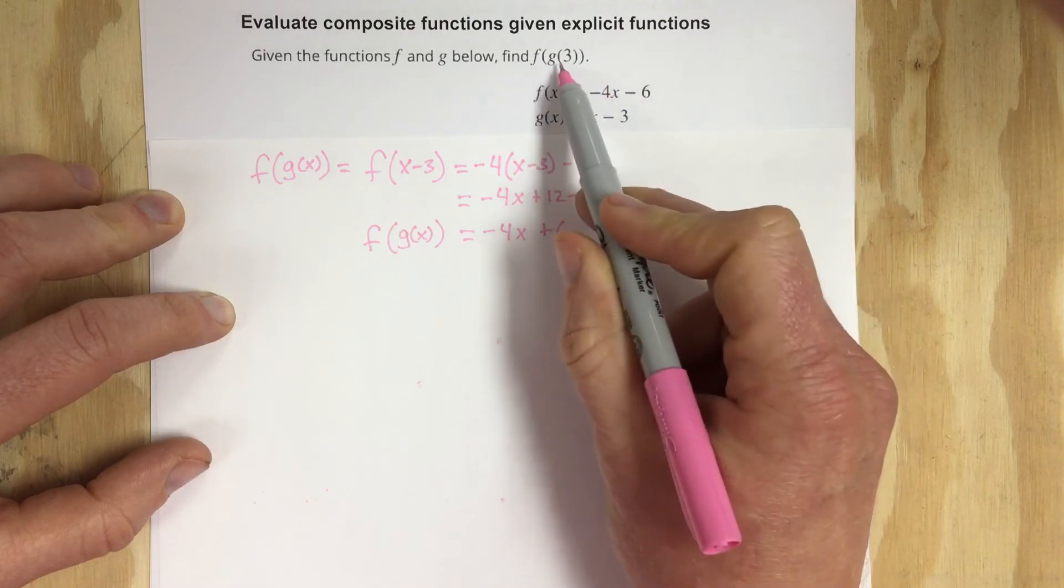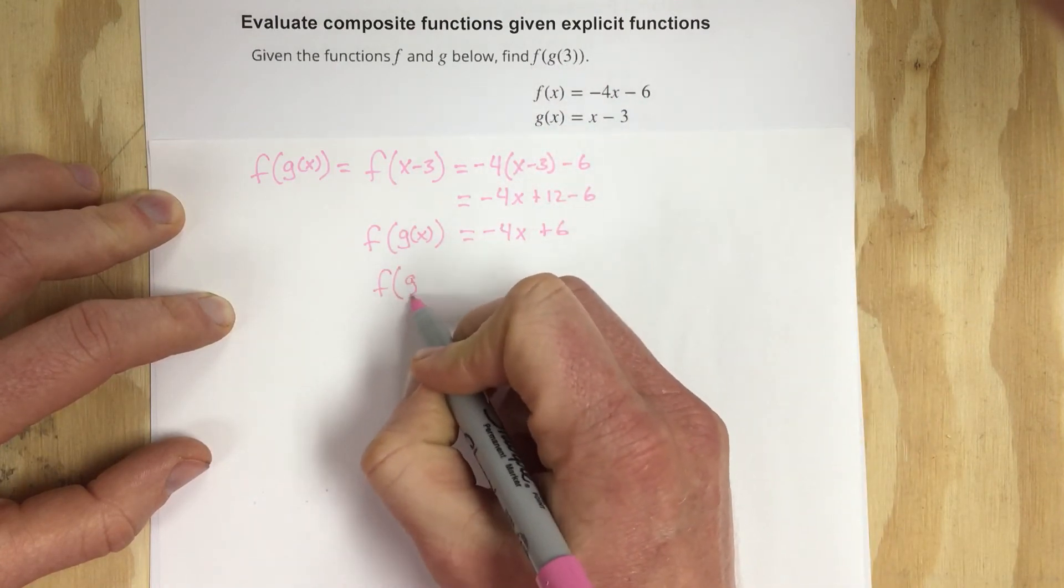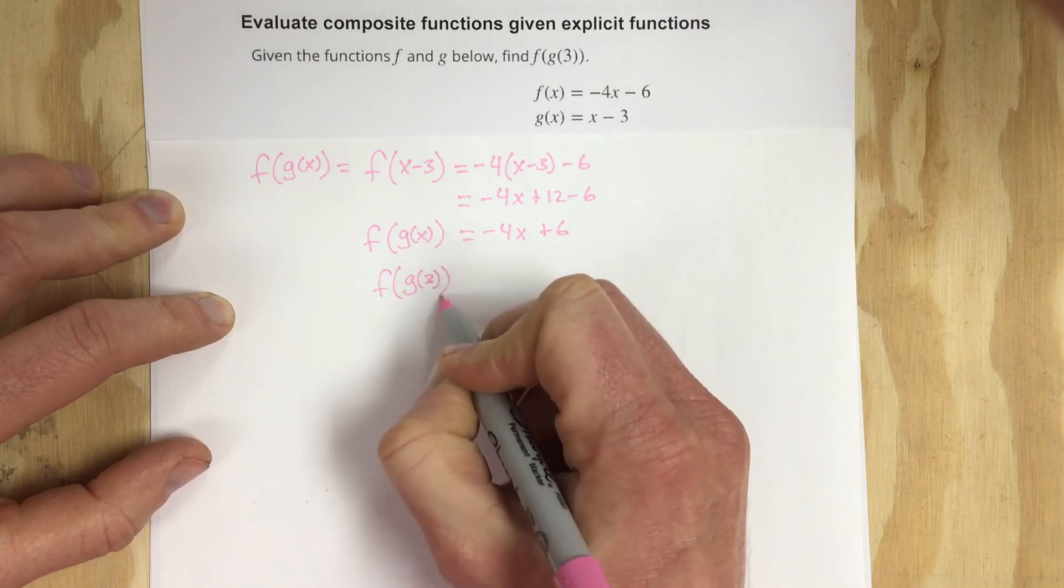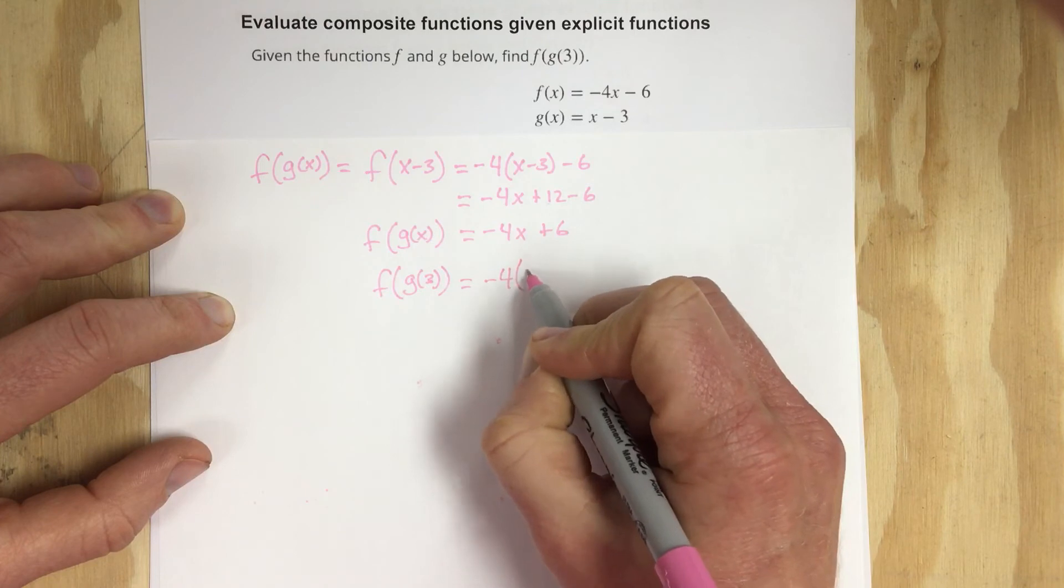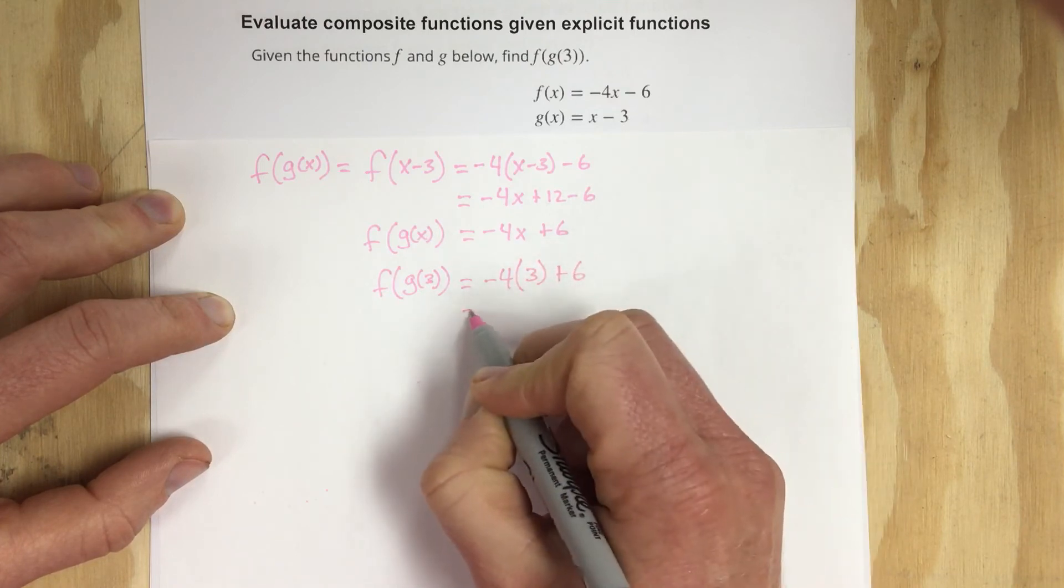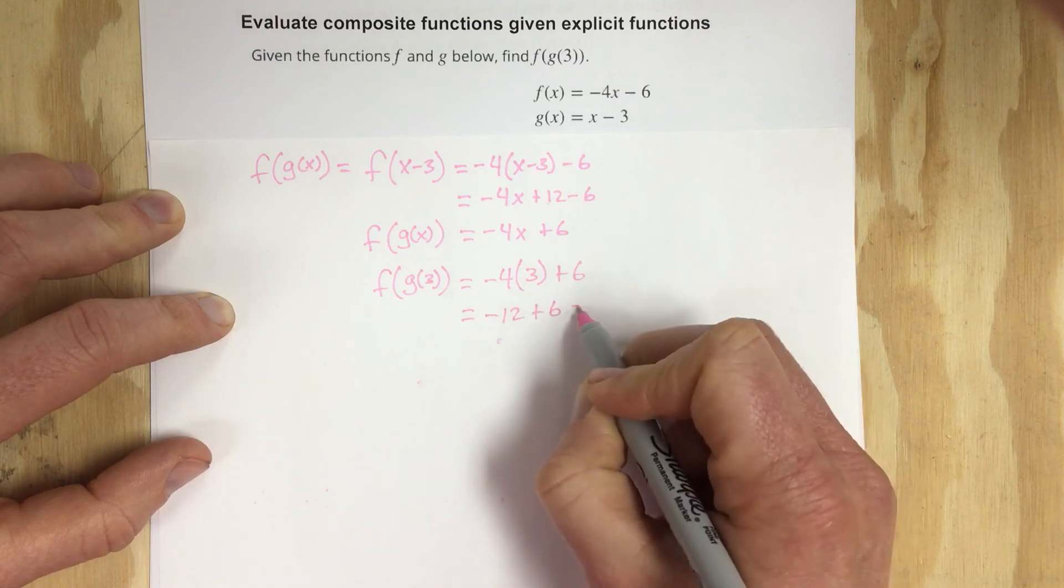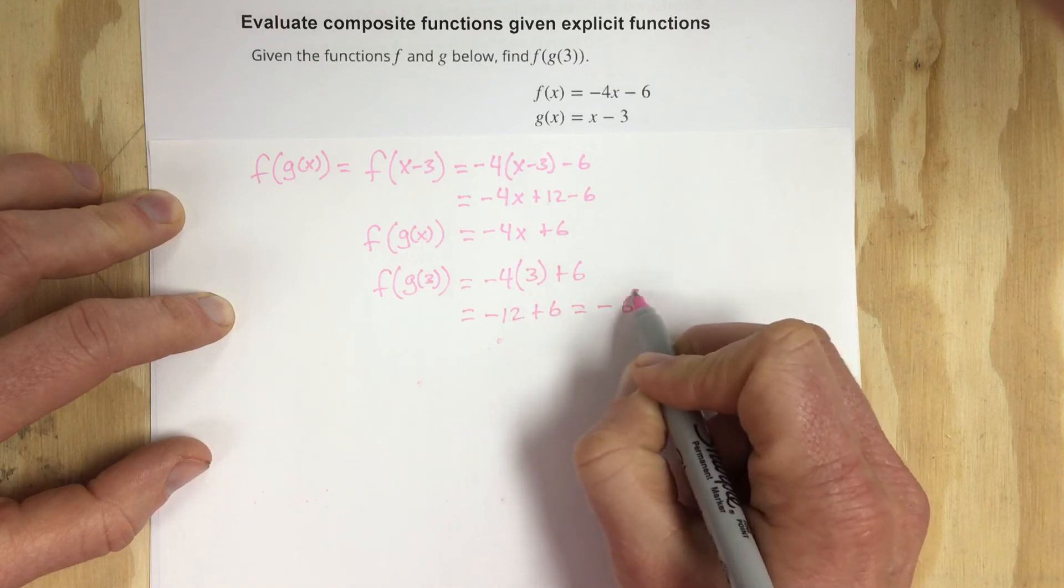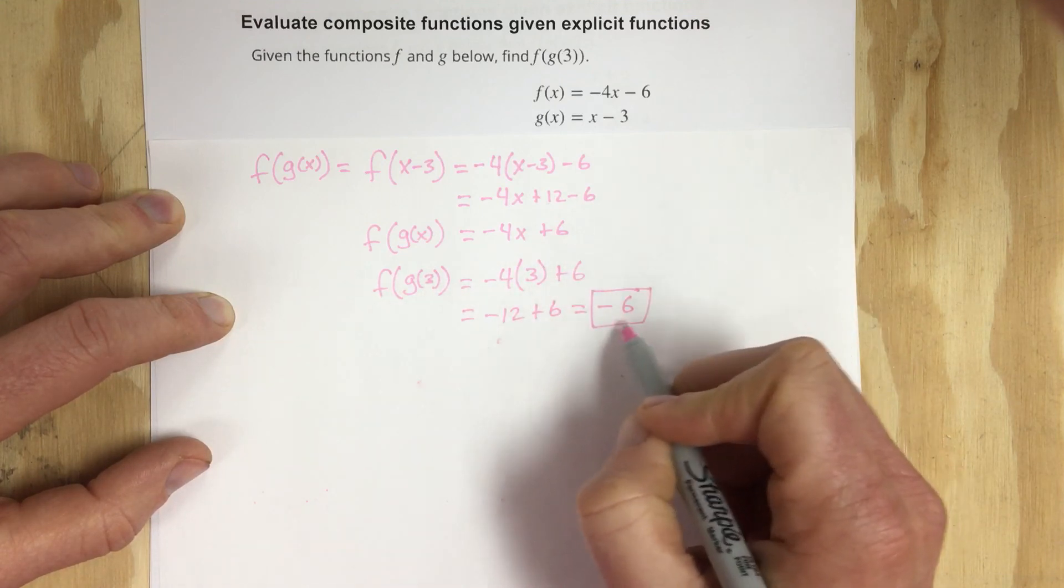Now in the problem they want us to find f of g of 3, so I will plug in 3 into our function that we just got, which is -4 times 3 plus 6, which gives you -12 + 6, which is equal to -6. So f of g of 3 equals -6.